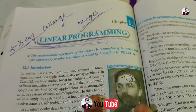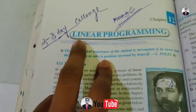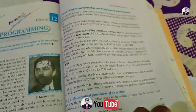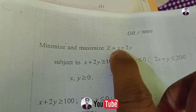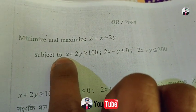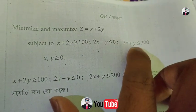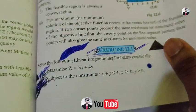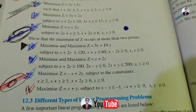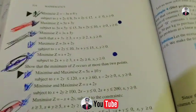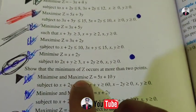Hello students, this is a HS final exam mathematics question. I'm making a video to help you solve it. It is from linear programming, Chapter 12, question number 12. The problem is to minimize and maximize Z equal to x plus twice y. It is from exercise 12.1, where the constraint is x plus y less than or equal to 200.